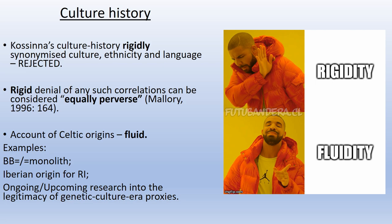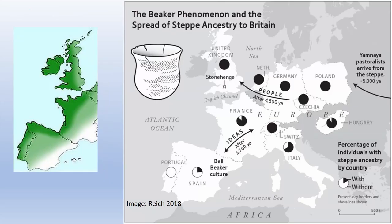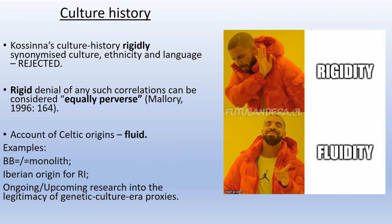To demonstrate that: the Bell Beaker culture, archaeologically — that material culture — is thought to have originated in Iberia, and that was prior to the spread from the Pontic-Caspian Steppe. Furthermore, the metallurgy from Ross Island is thought by archaeologists such as Gibson and Fitzpatrick to have spread from Iberia also. So that Bell Beaker culture is not a monolith — not genetically, not linguistically.